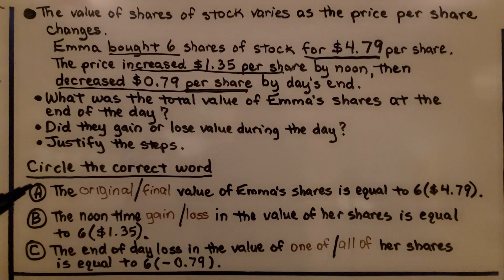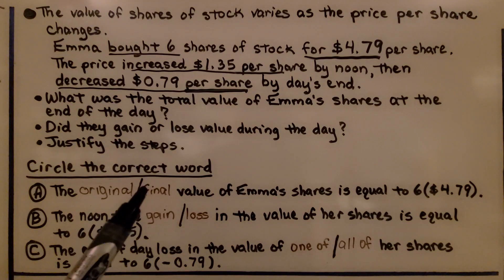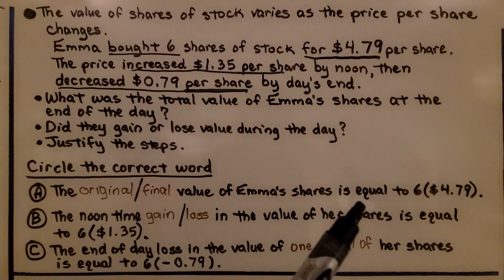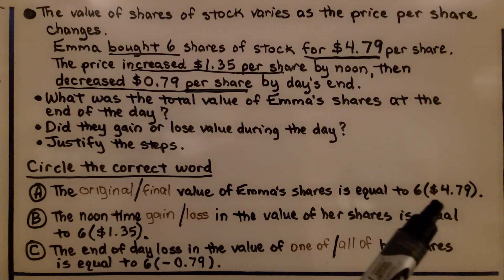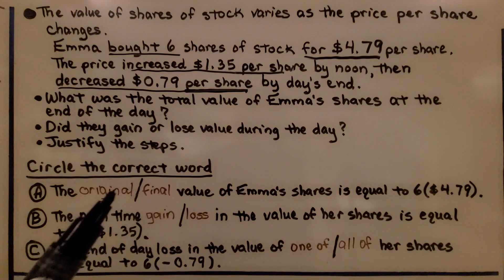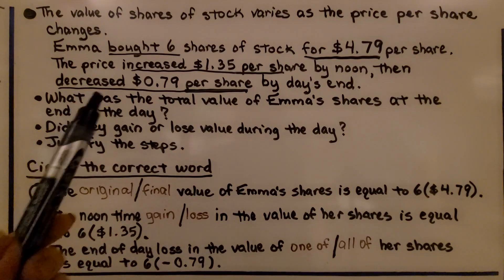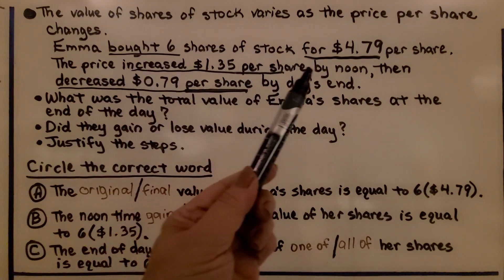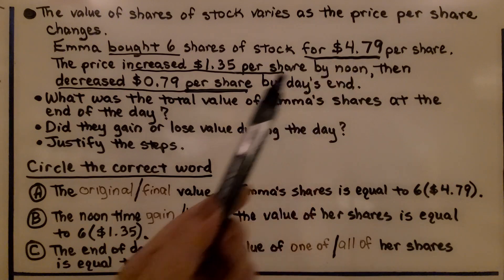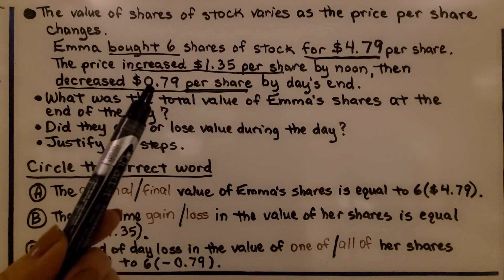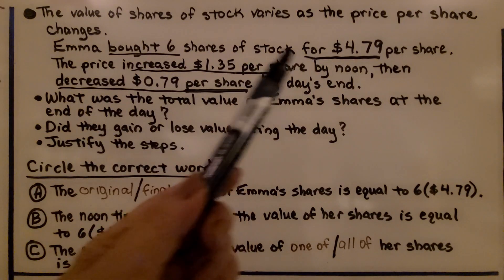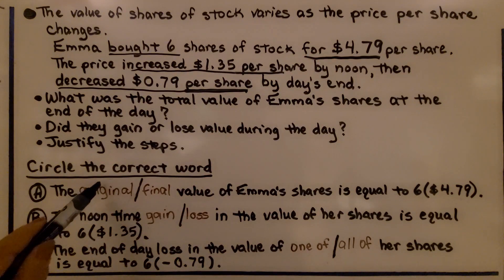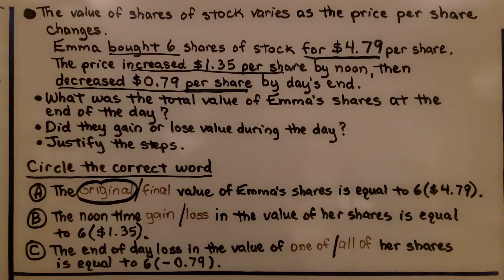So for A, we have a choice of original or final. It says the original or final value of Emma's shares is equal to 6 times $4.79. So is that the original value or the final value? Well, it says she bought 6 shares of stock for $4.79. Then it increased and decreased. So this was what happened at first. This is the original value, 6 times $4.79.